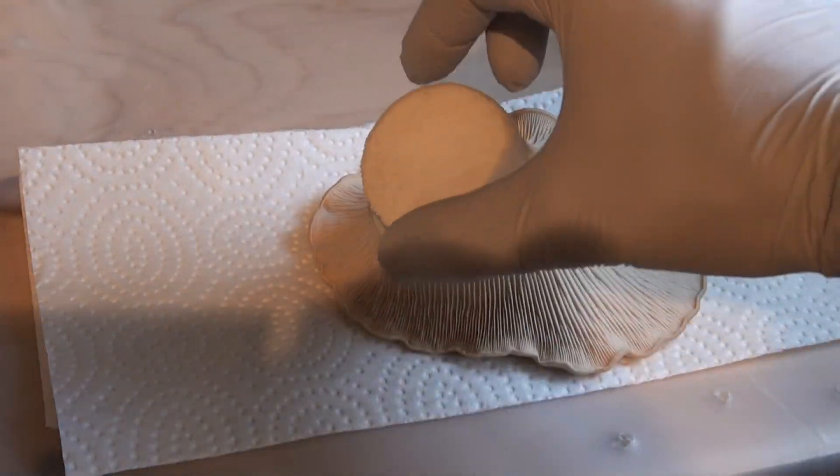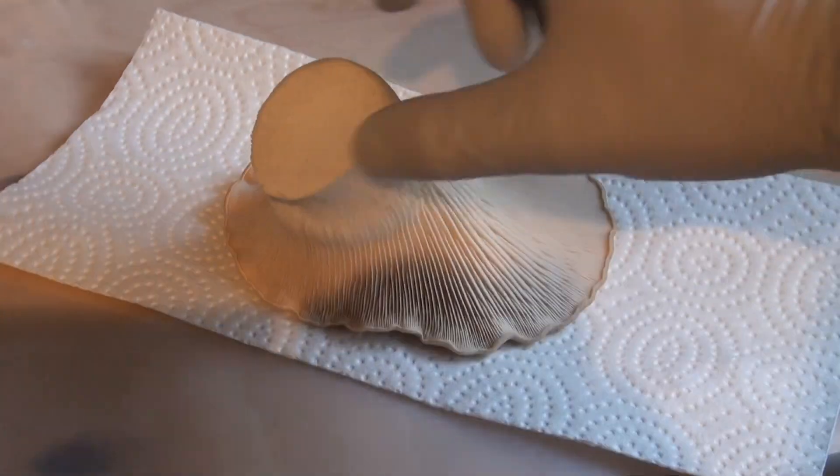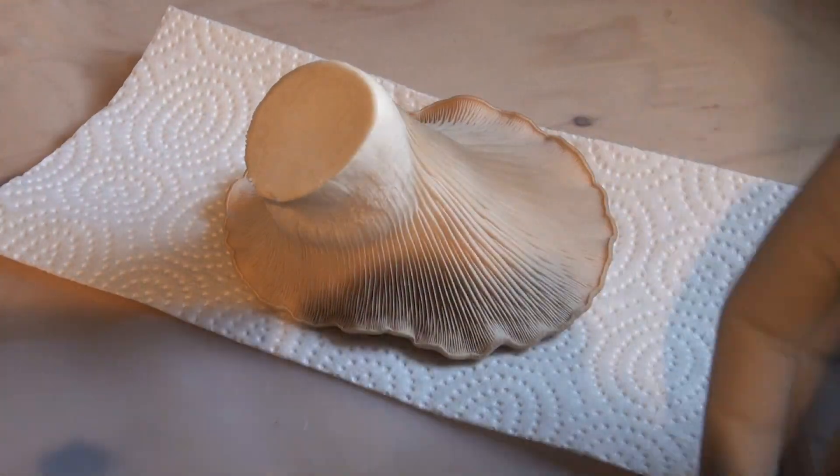So here's the mushroom. I cut off most of the stem. Normally I would just keep the whole fruit body and tear it in half, but since this one is so large, I won't really be able to tear it right in half evenly.